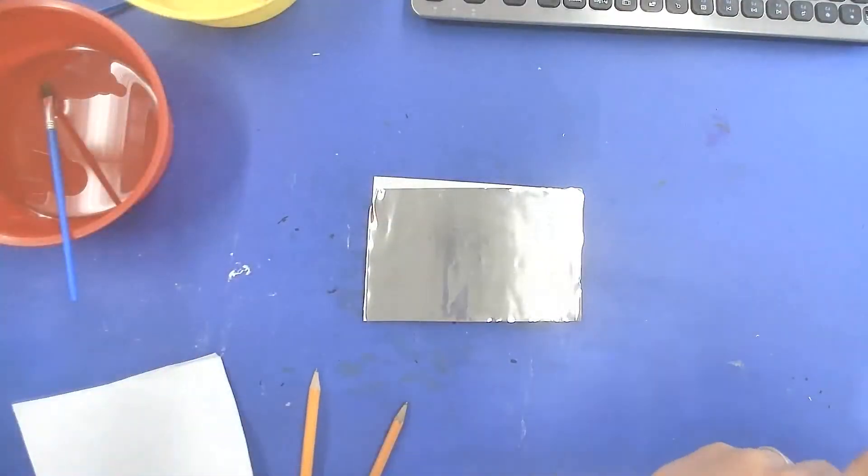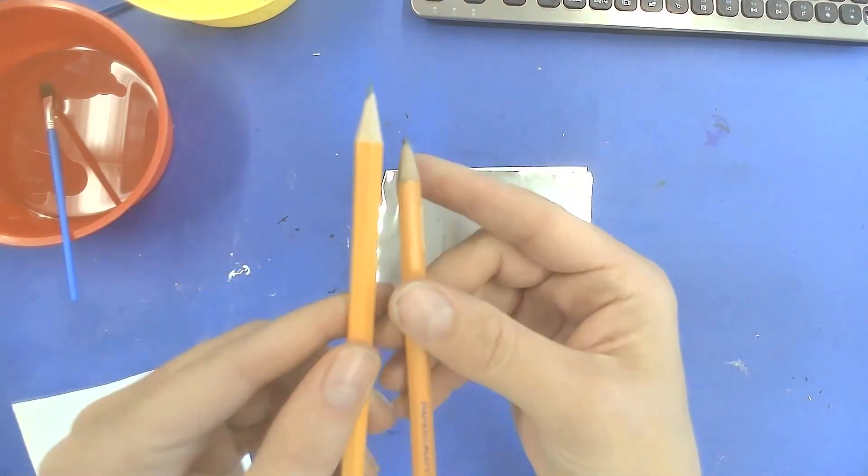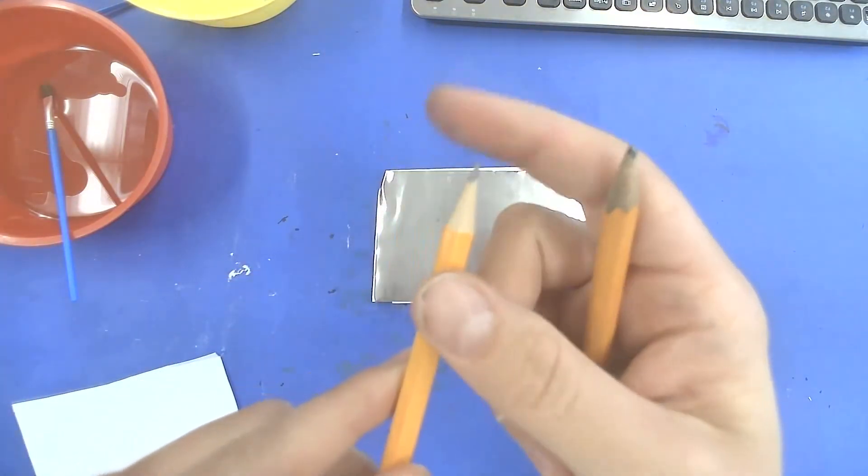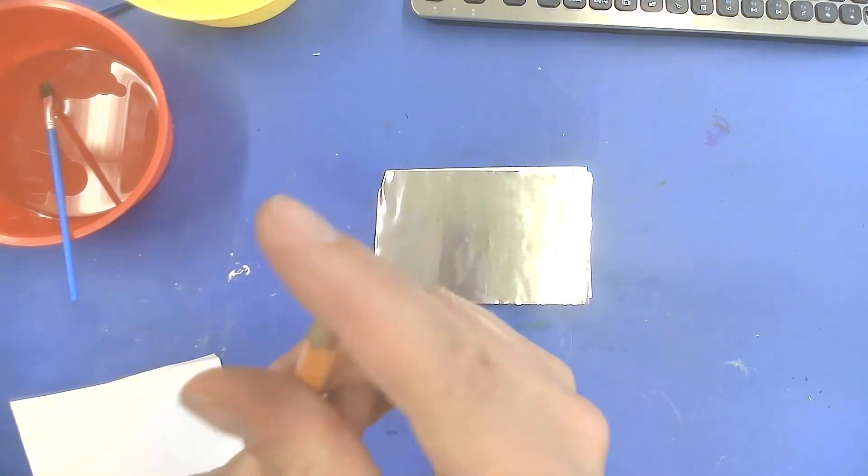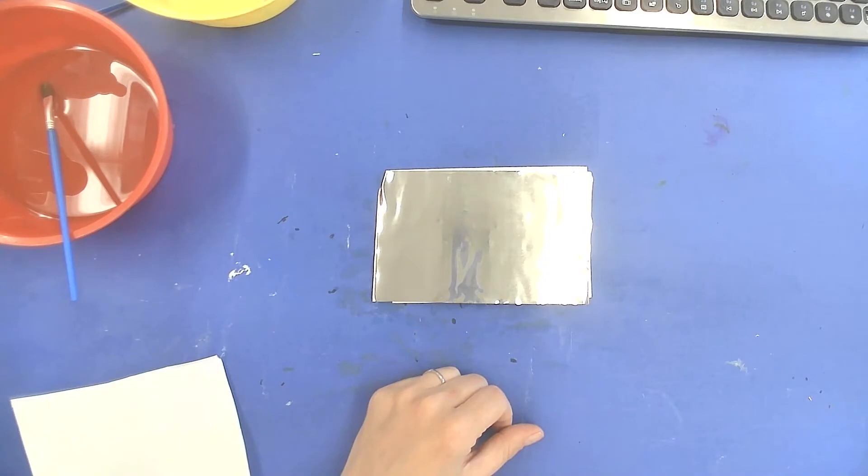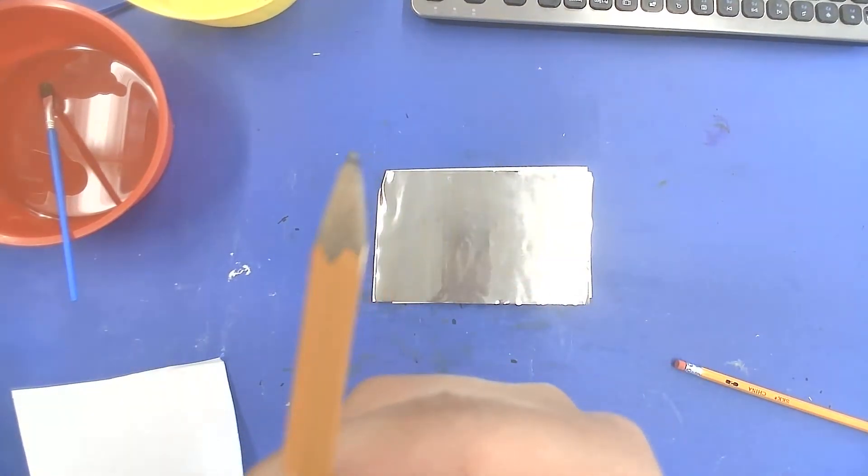So you're going to need that sheet of metal, that piece of foam, and a dull pencil. You want something with a dull tip. A sharp tip is going to go right through the metal so we don't want that. So if you have a sharp pencil just color with it for a little bit somewhere so that the tip becomes dull kind of like this.